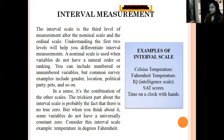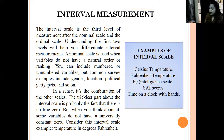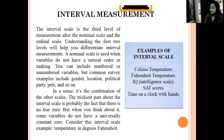In interval measurement, we have equal distance between points. Examples include intelligence scores, aptitude scores, the calendar, the Fahrenheit scale, and the Celsius scale. Statistical operations for interval measurement include standard deviation, standard variation, Pearson's R, T-test, F-test, and coefficient of variation. Remember: for each level, state what the level is, give an example, and then list the statistical operations.